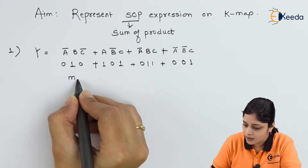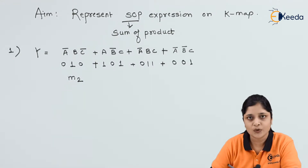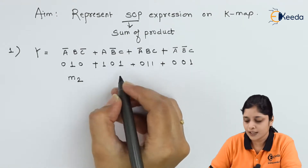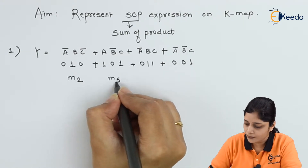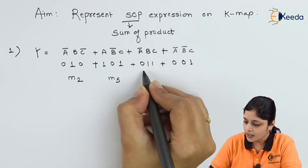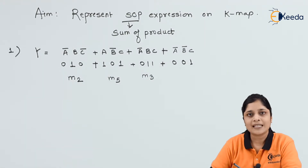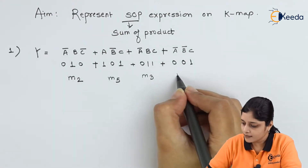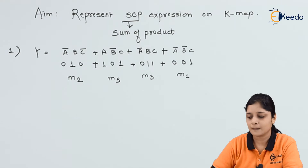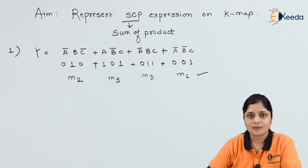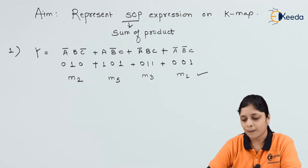In this way you mention zeros and ones considering the SOP form. Now we will represent the minterms. 0,0,1 is minterm m1; 0,1,0 is minterm m2; 1,0,1 means 4 plus 1 is 5, so m5; 0,1,1 is m3; and 0,0,1 is m1. So we got minterms m1, m2, m3, and m5.